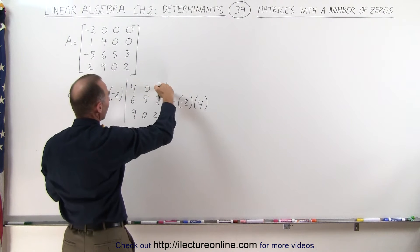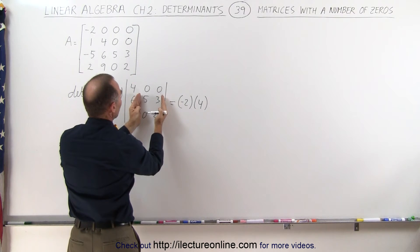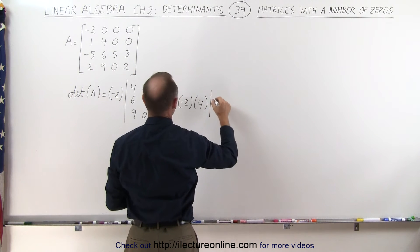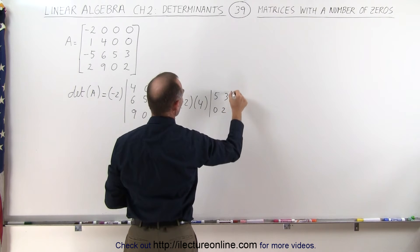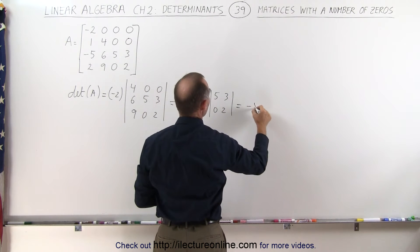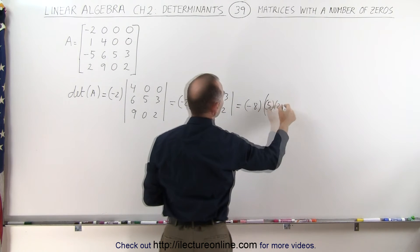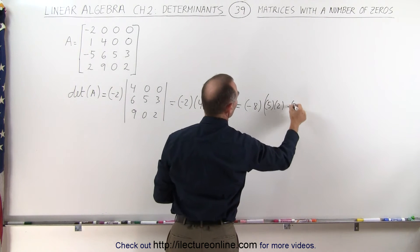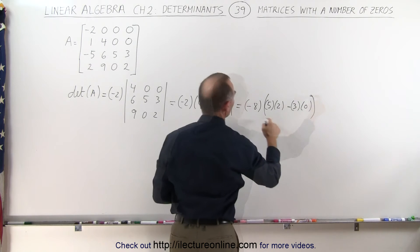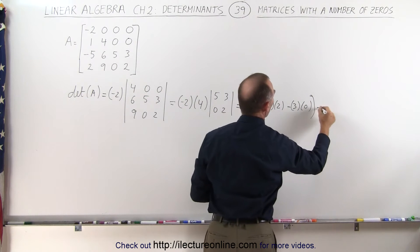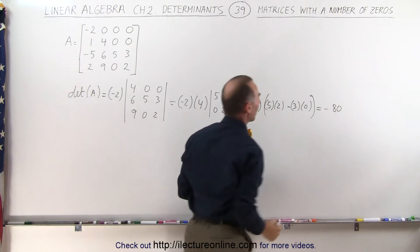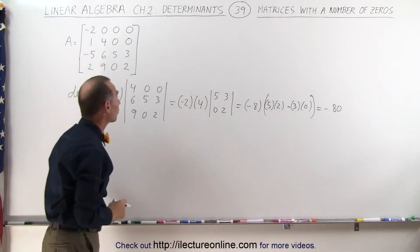And then we can cross out this row and this column, and now we have this matrix right here which is the matrix [5 0; 2 ?], which essentially can be written as negative 8 times 5 times 2 minus 3 times 0. And so we get minus 8 times 10 or minus 80, and that would be the determinant of that matrix.